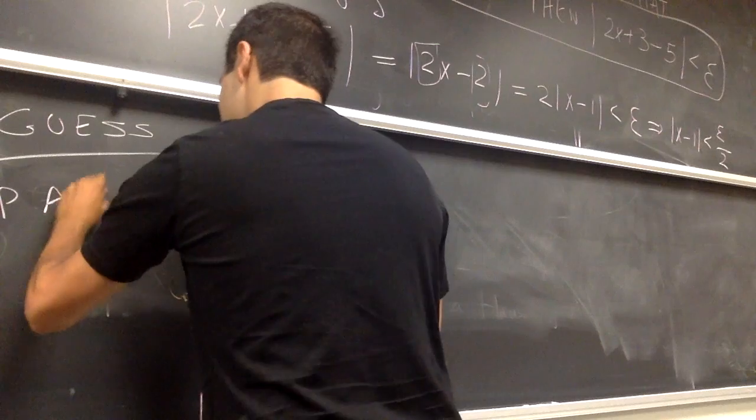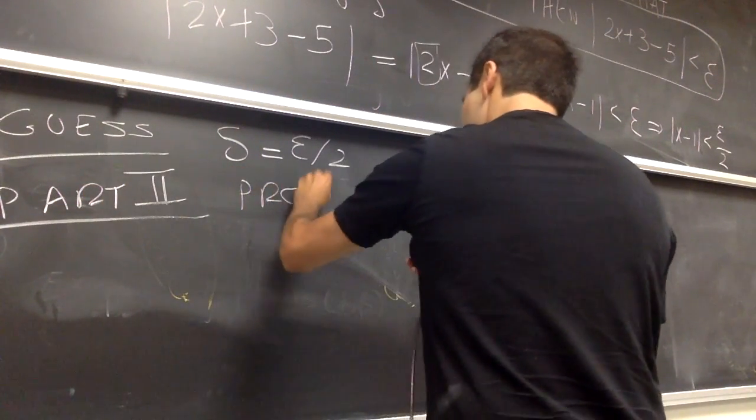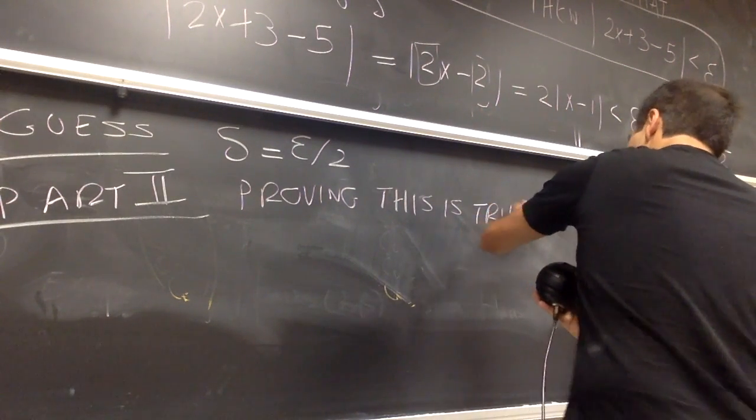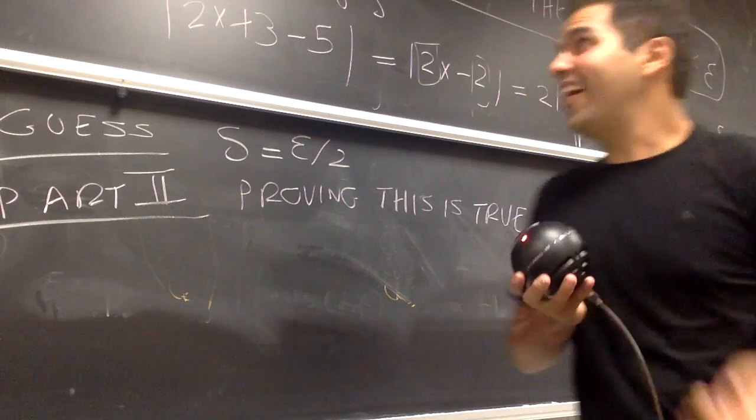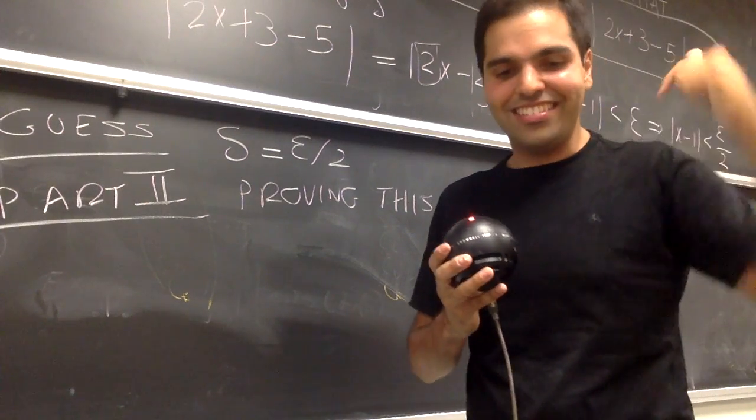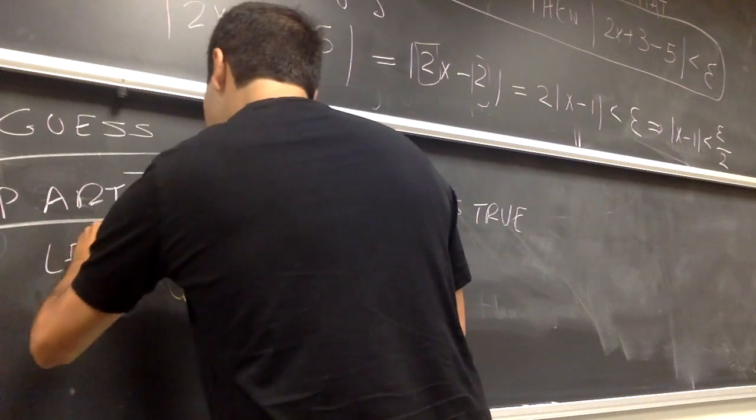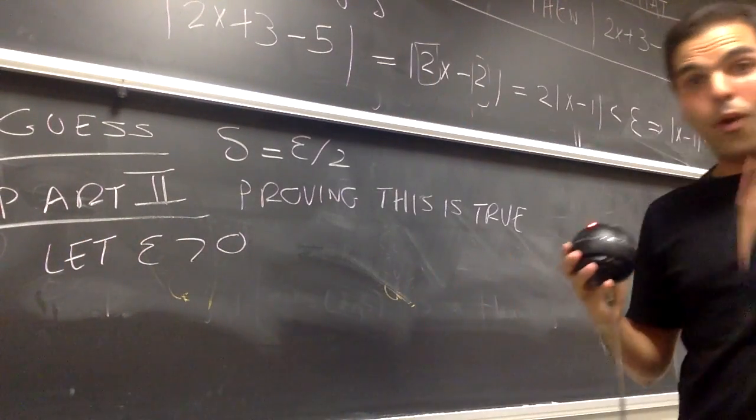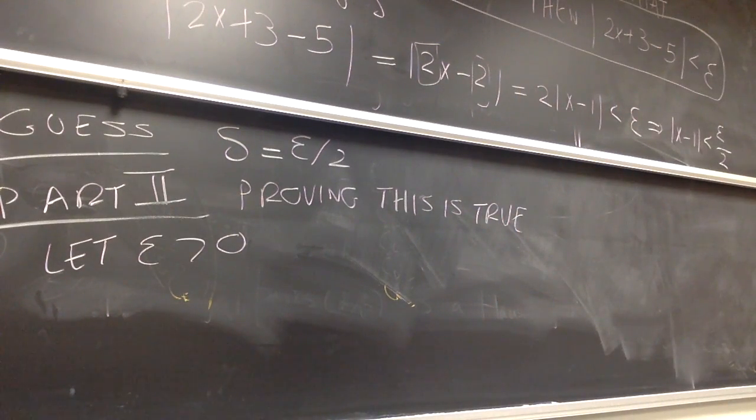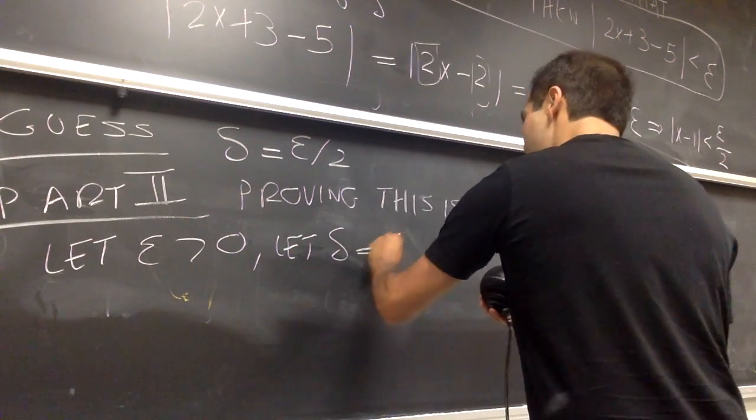So, part 2. Actually, proving this is true. So, let's start with the big phrase of math. Whenever you take analysis, it's a higher level math course. All the proofs begin like that. It says just, let Epsilon be greater than 0. It's a whole magic formula. It's the equivalent of abracadabra, but in math. So, let Epsilon greater than 0, and let Delta be Epsilon over 2.